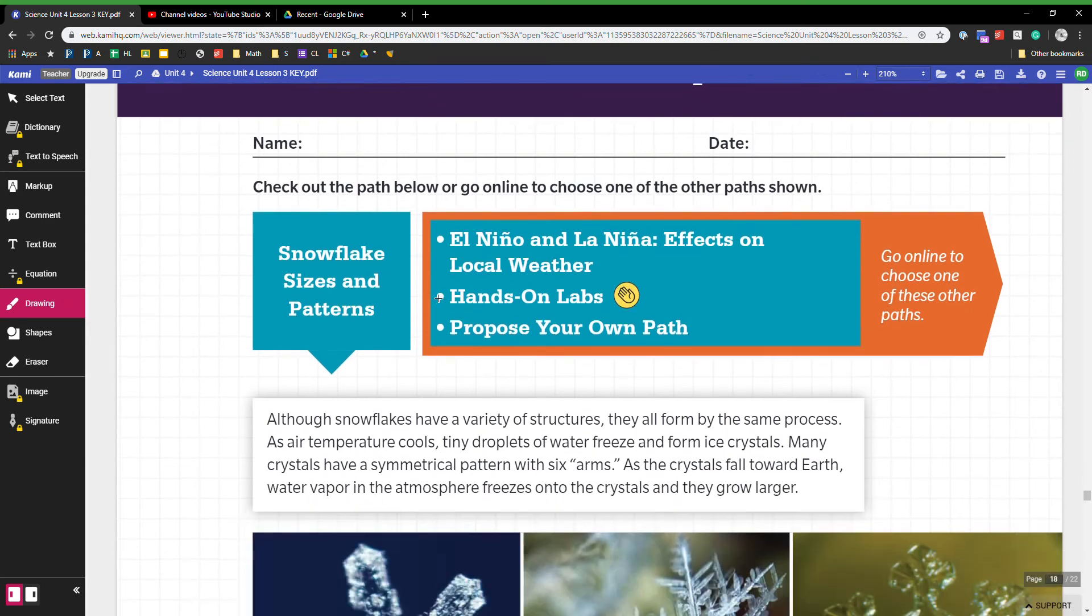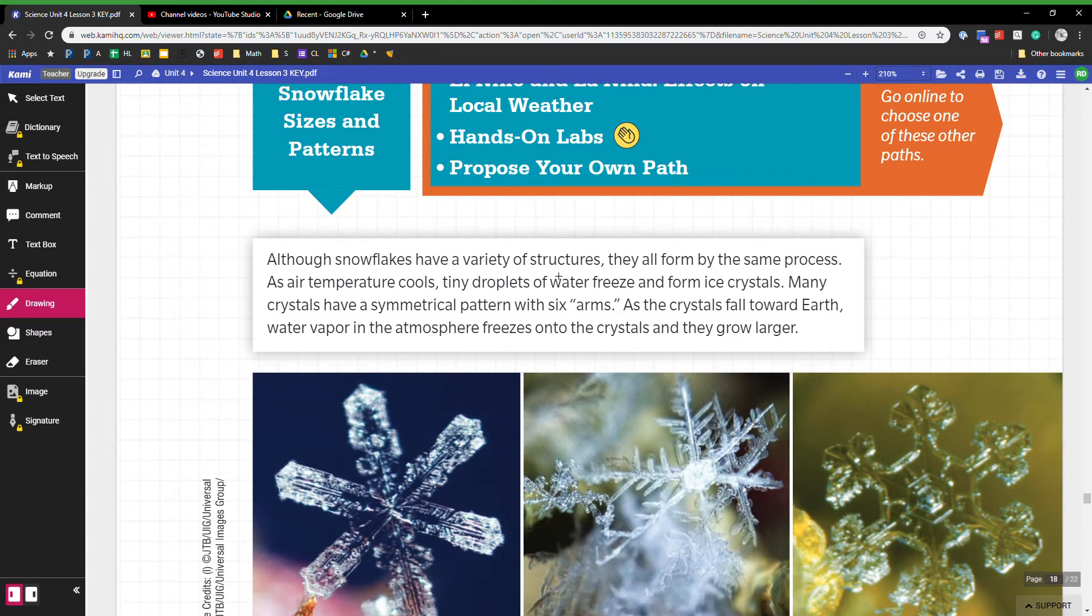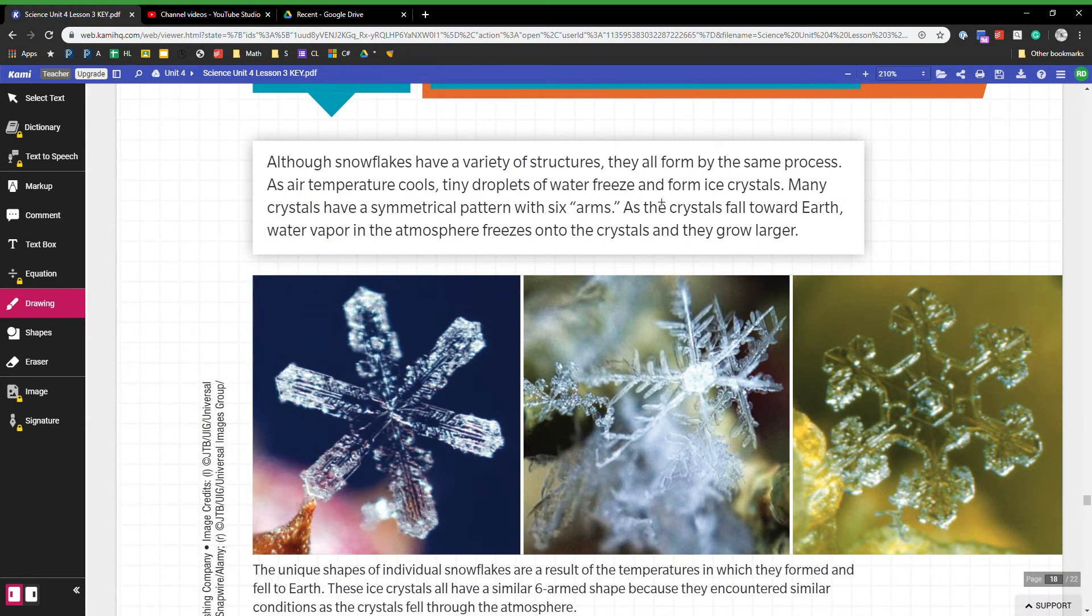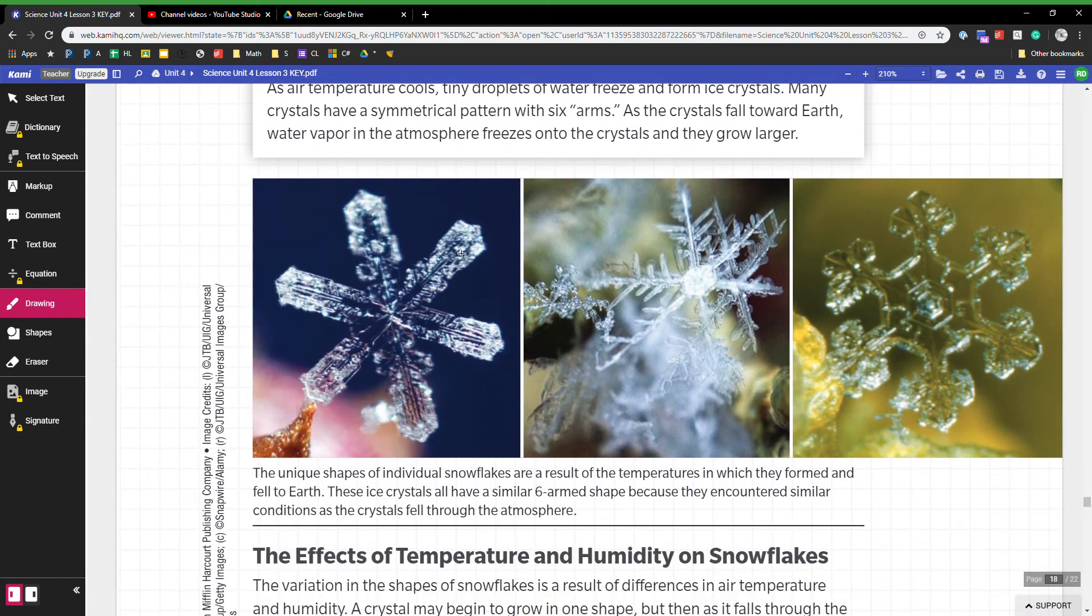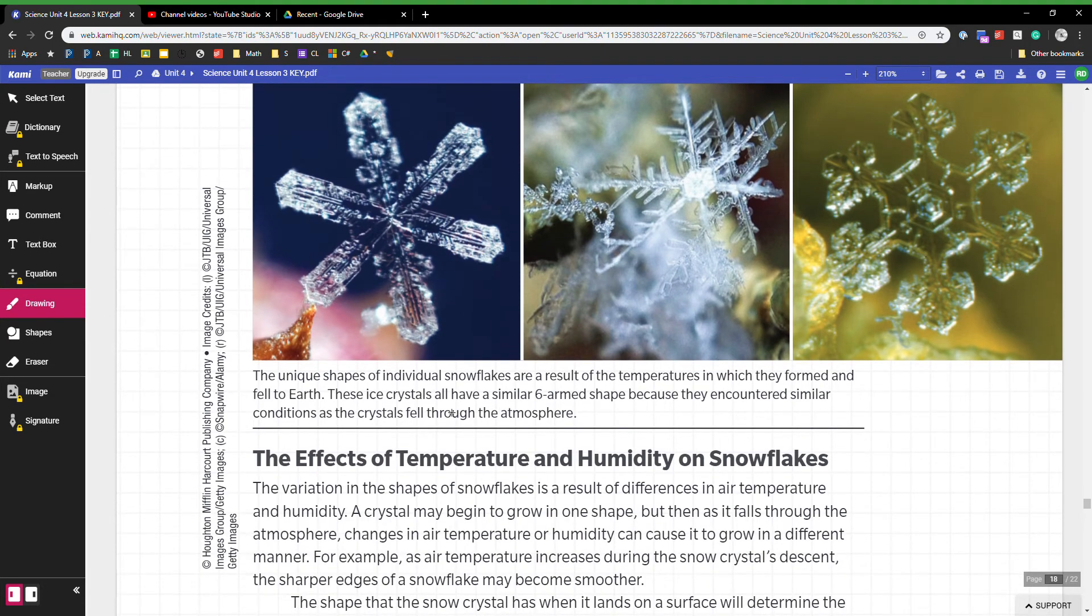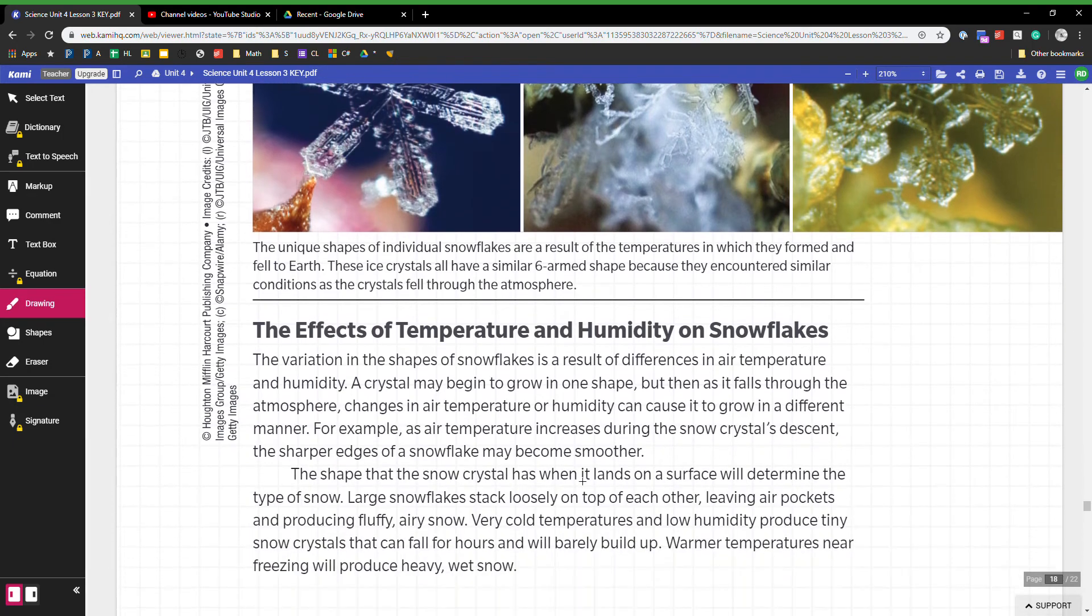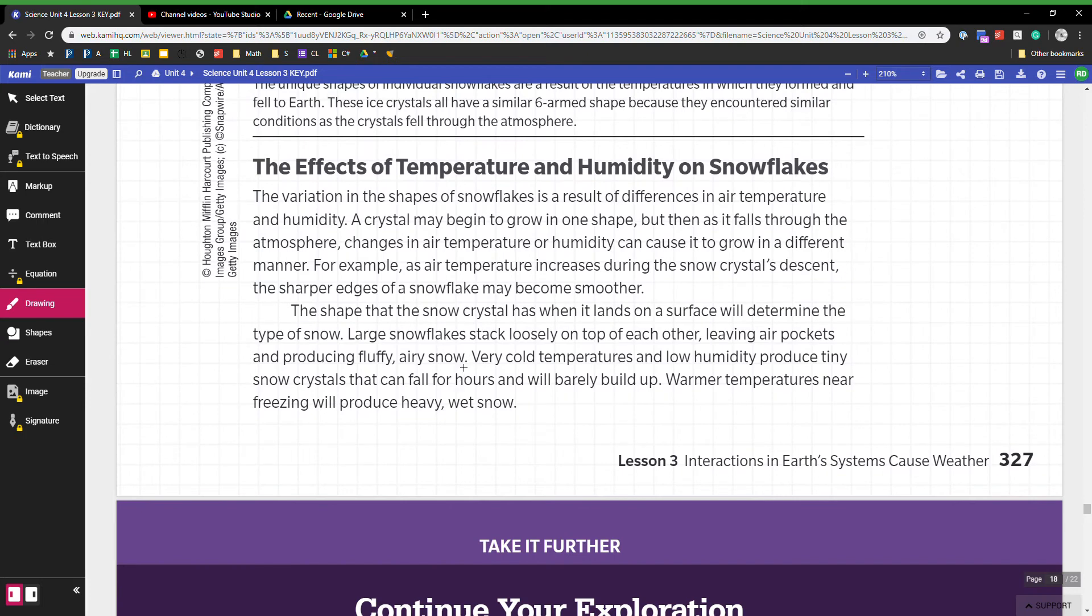Okay, this one's about snowflakes. All those snowflakes have a variety of structures, they all freeze in the same process. As air temperature cools, tiny droplets of water freeze and form ice crystals. Many patterns form a pattern with six arms. As the crystals fall towards earth, water vapor in the atmosphere freezes into crystals and they grow larger. So these are some examples of snowflakes.